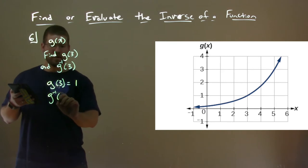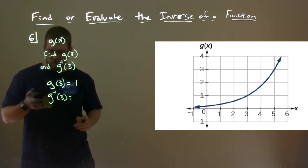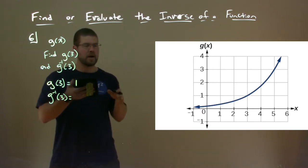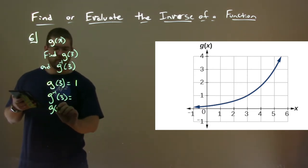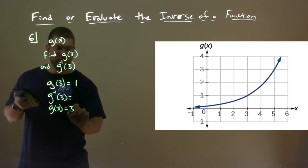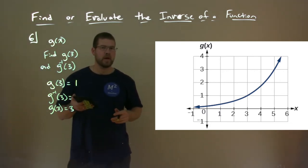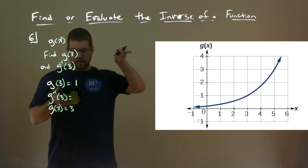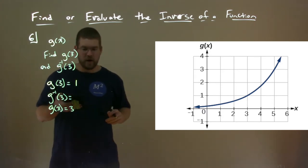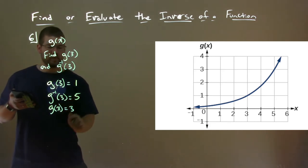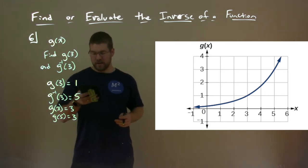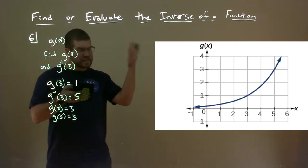What is g inverse of 3? What we want to do is we look at our graph, we reverse it back up. Ask this question: what x value gives us an output of 3? And we look at that, we say the output g(x) being 3 gives us the input of 5. So the inverse of 3 is equal to 5. g(5) equals 3, and the g inverse of 3 is equal to 5. And we can see that in our graph here.